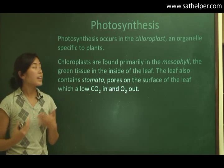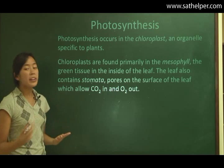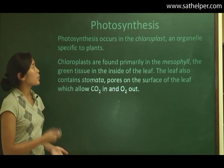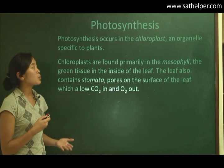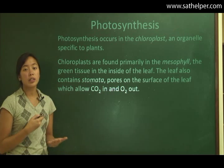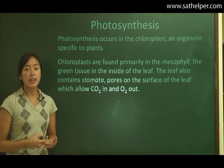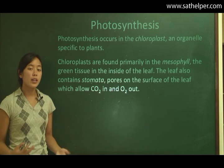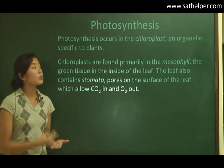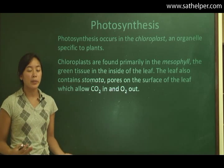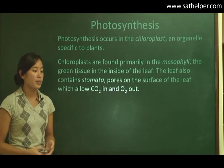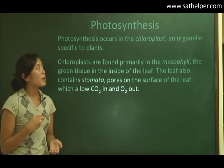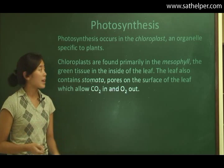In prokaryotes — I mentioned that some prokaryotes undergo photosynthesis — photosynthesis wouldn't occur in the chloroplast, because prokaryotes don't have organelles. So in prokaryotes, photosynthesis would actually just take place in the cytoplasm. Let's learn a little bit more about the chloroplast.